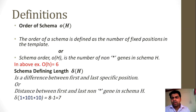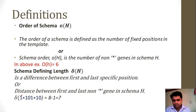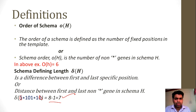Now let's see the schema defining length. Schema defining length is the difference between the first and last specific position — or the difference between the first and last non-asterisk gene in schema H. In our previous example, the first specific position is 1 and the last is 8, so the schema defining length is 8 minus 1, which equals 7.